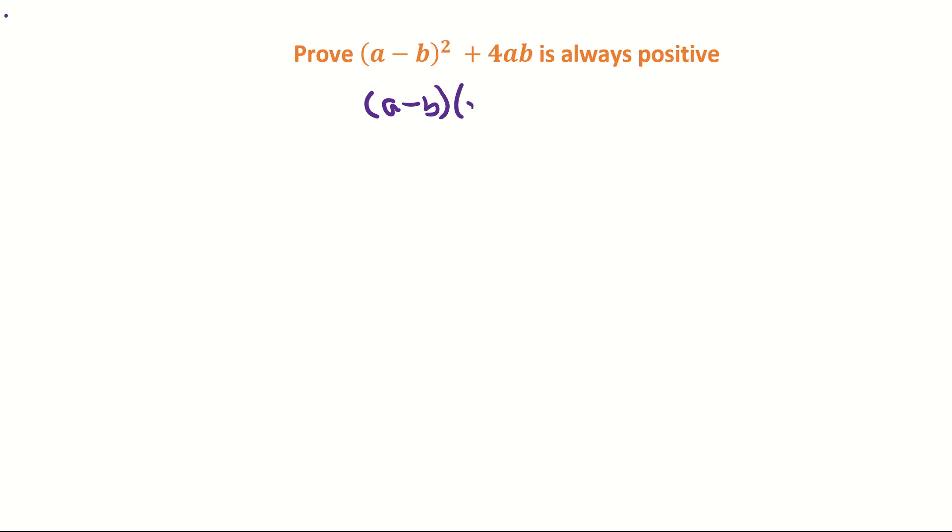So it's (a - b) times (a - b) plus the 4ab. Multiplying out the two brackets, it's first term by second bracket and then second term by second bracket. Then don't forget to put back in your 4ab.